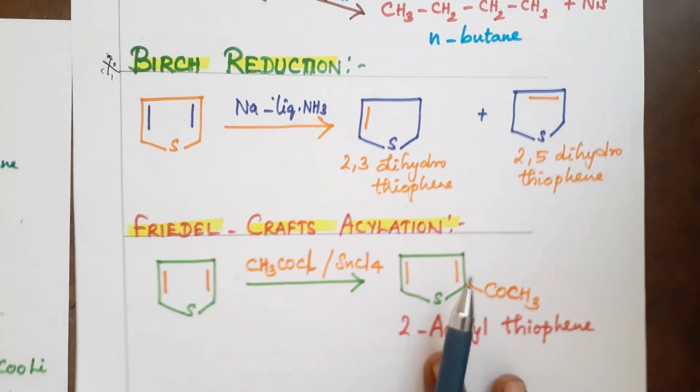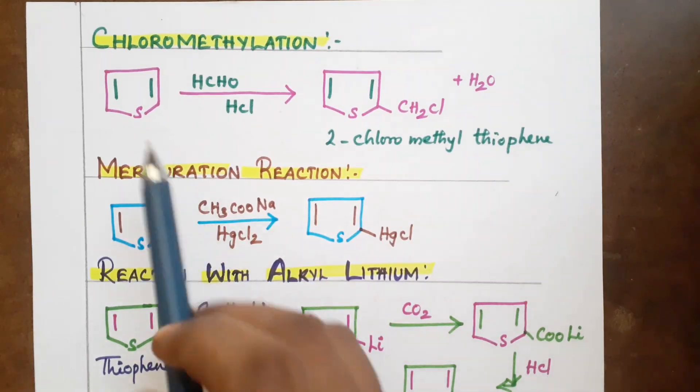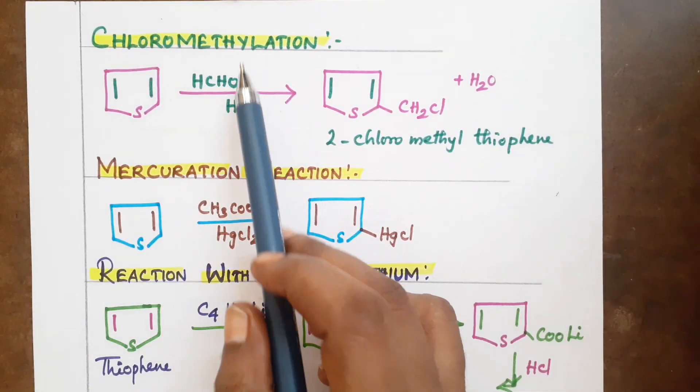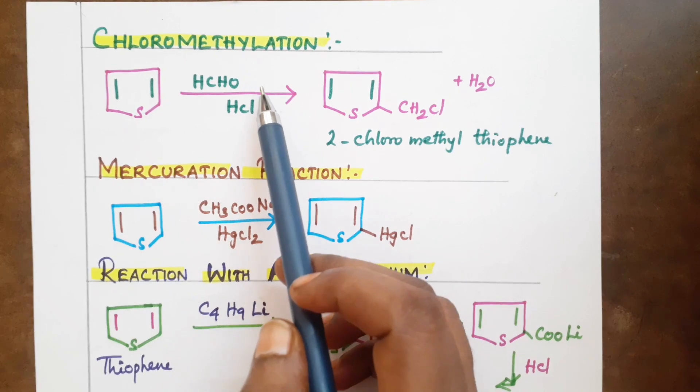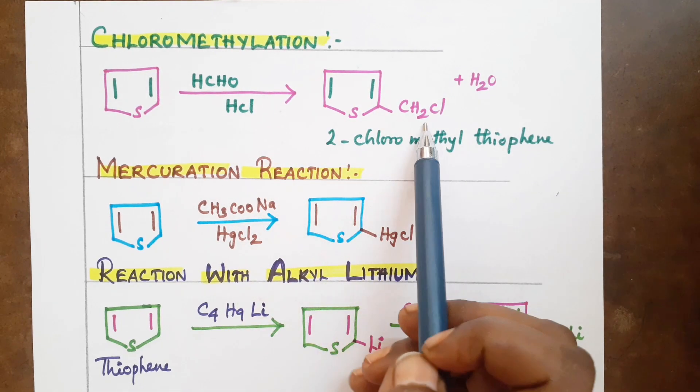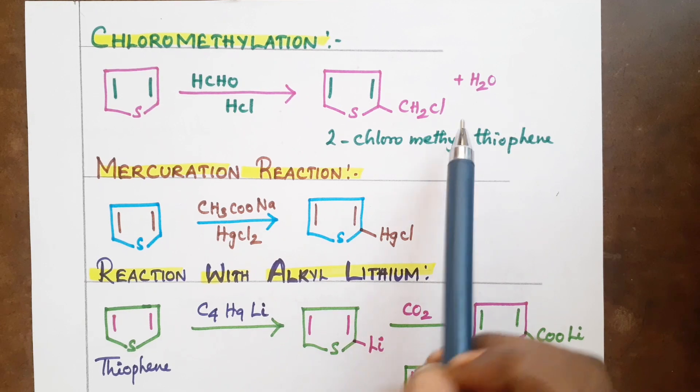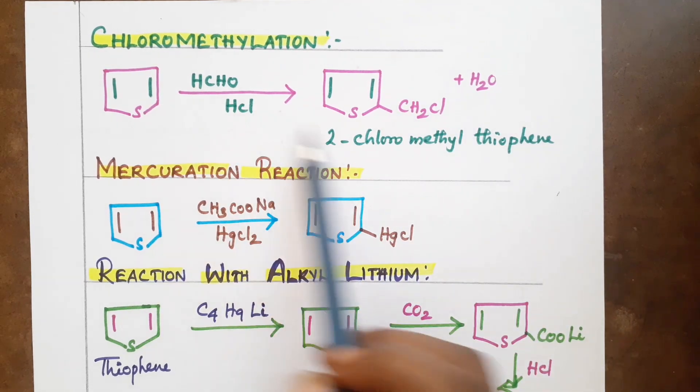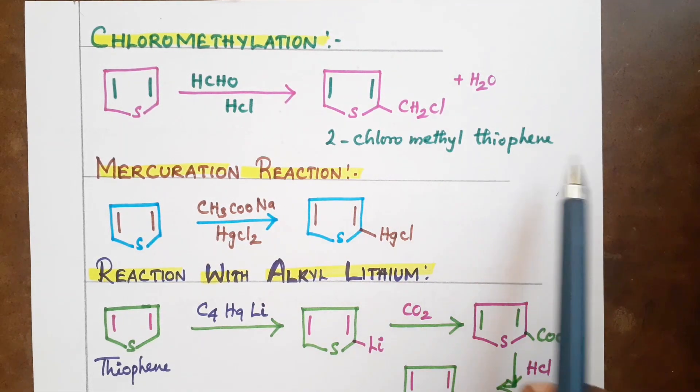The next reaction is chloromethylation. Thiophene undergoes chloromethylation in presence of formaldehyde and HCl. It gives CH2Cl, the formaldehyde group is CH2Cl. This produces 2-chloromethylthiophene.